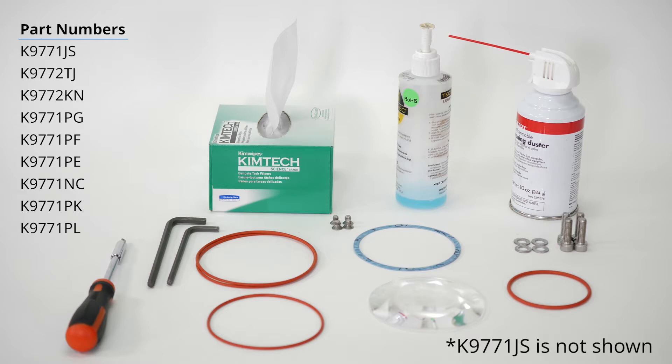Or, instead of taking it apart and putting it back together, you could just order one K9771NC, the LAO lens mounting body assembly, so it's basically a pre-assembled LAO. K9771PK, M8 L25 cap socket screws, you'll need four of those for mounting the LAO to the alignment flange. K9771PL, M8 flat washers, you'll need four of those as well.